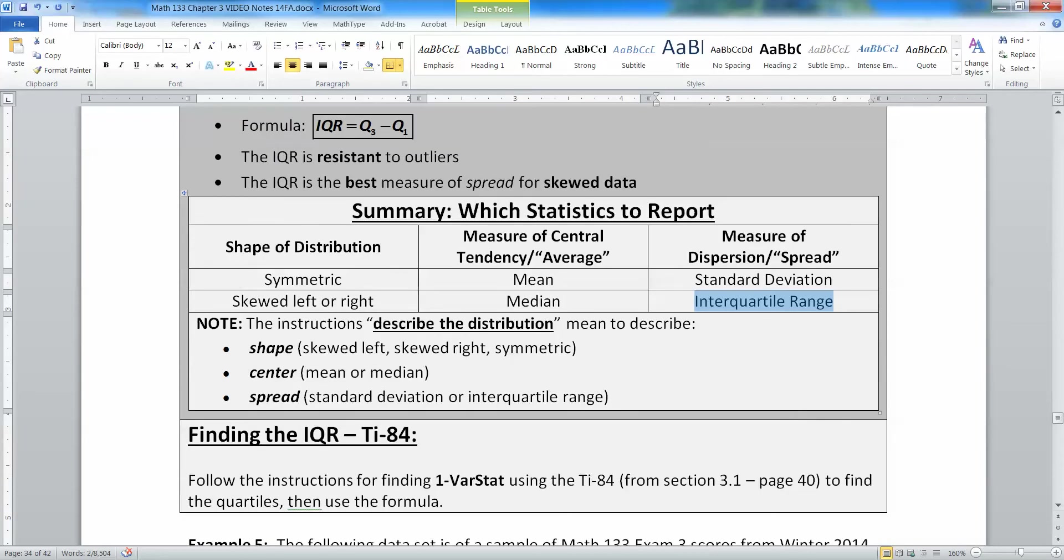Throughout the course, we're going to state several times in the notes and in the exams and in the worksheets and projects that you are to describe the distribution. What that means is that you want to discuss its shape, its center, and its spread. So shape, meaning is it skewed left, skewed right, symmetric. What's its center, right? Where is its mean or its median, depending on which is the better measure. And its spread, either use standard deviation if it's symmetric or the interquartile range if it's not symmetric.